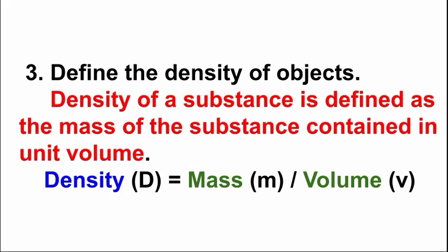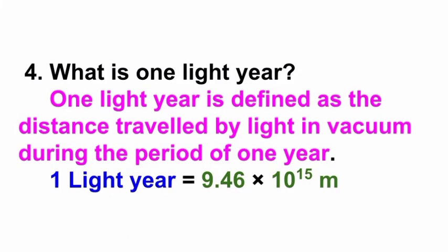Fourth question: Define light year. One light year is defined as the distance travelled by light in vacuum during the period of one year. One light year is equal to 9.46 × 10¹⁵ meters.